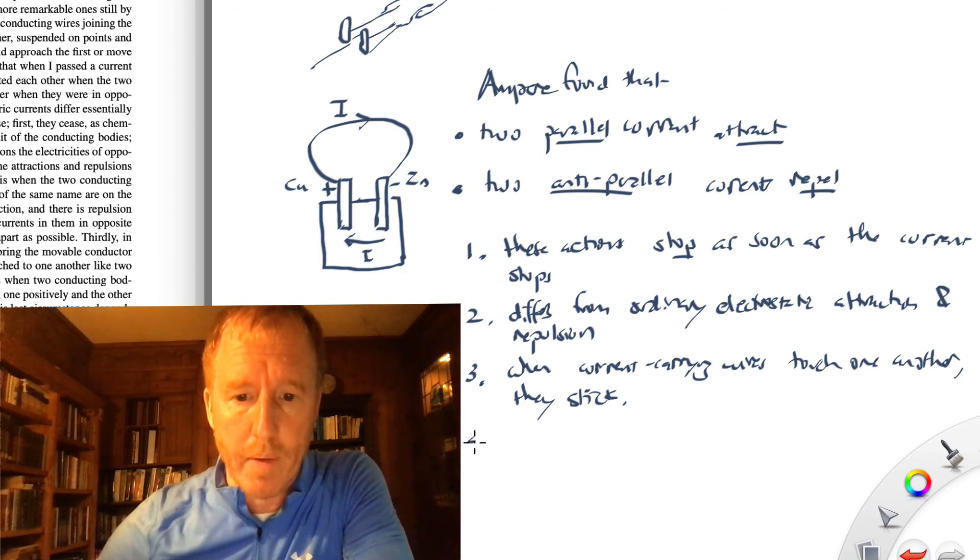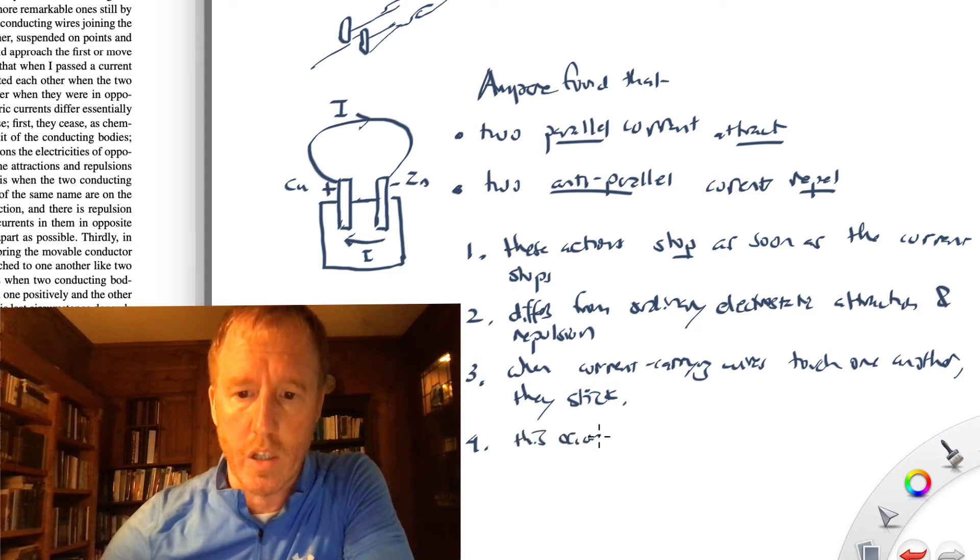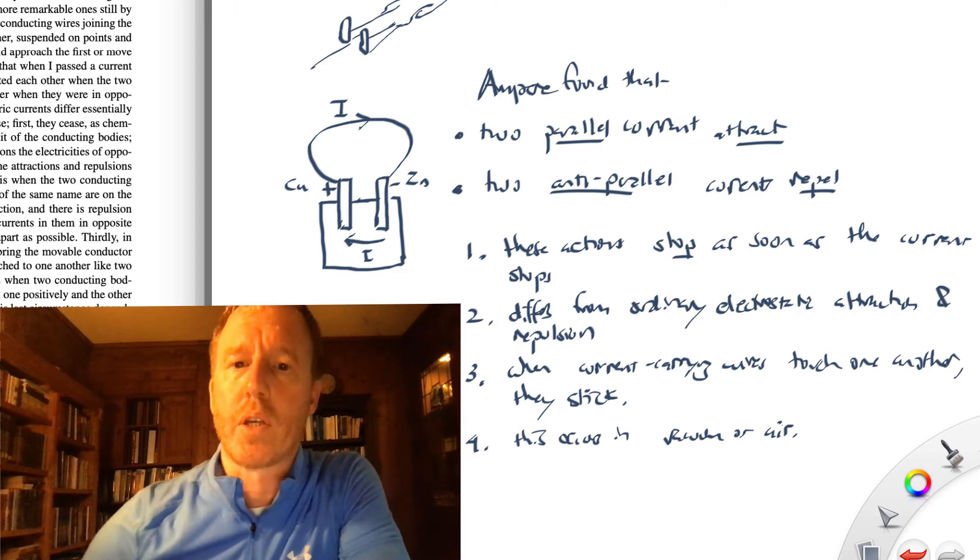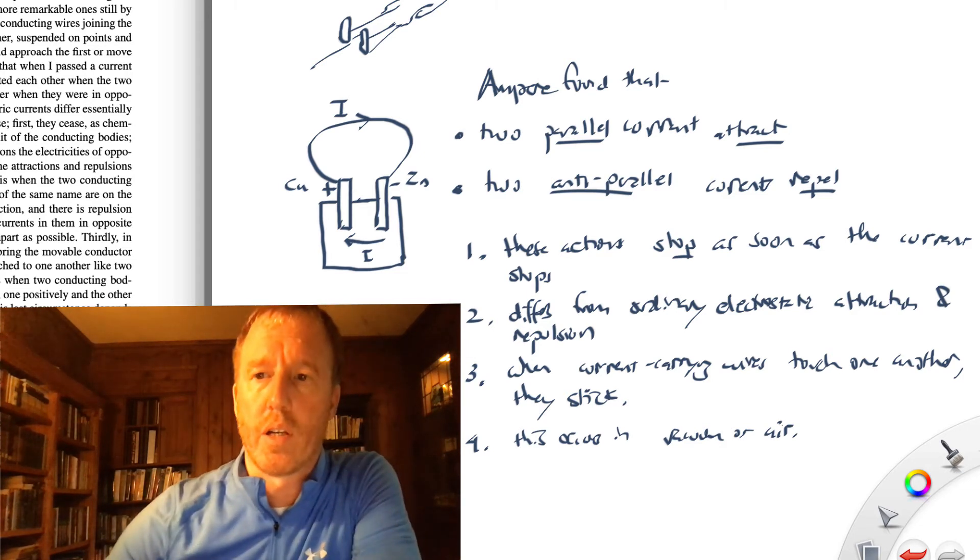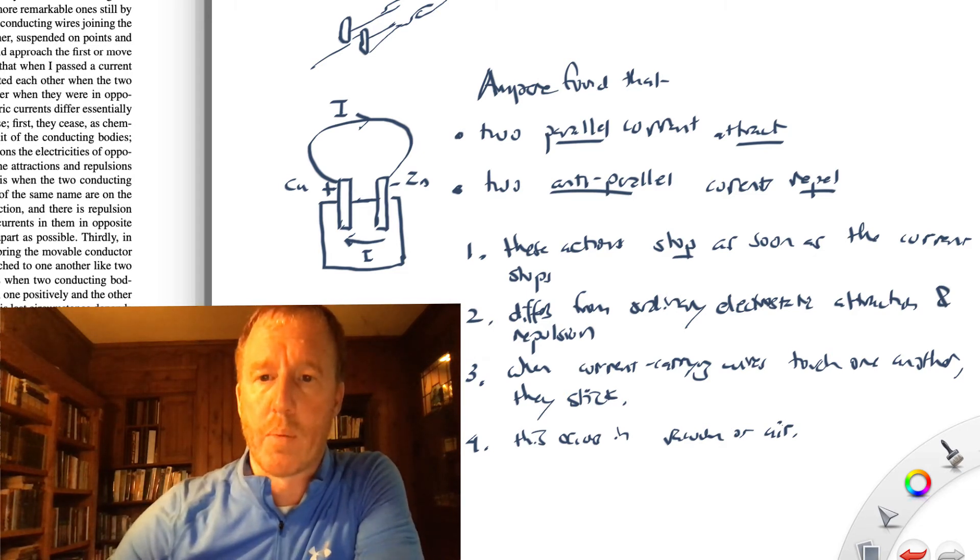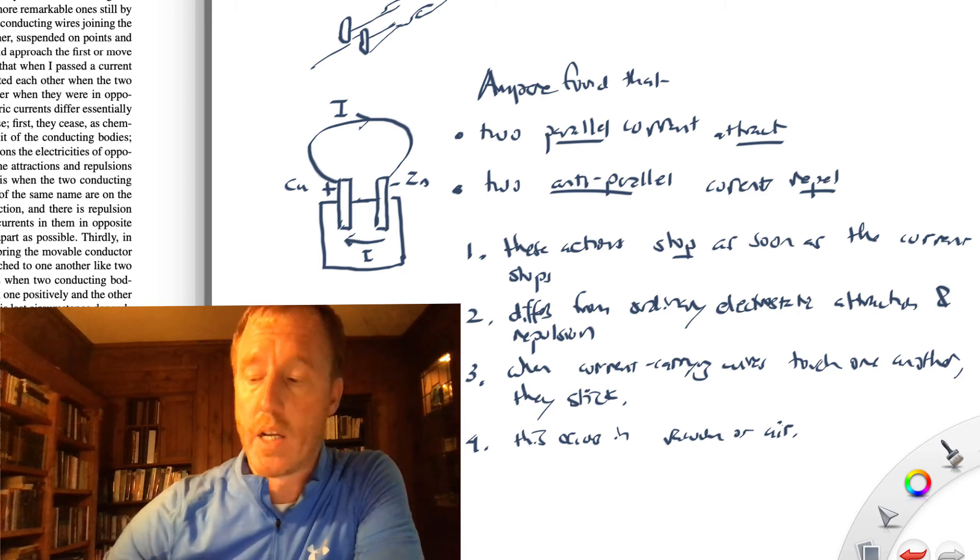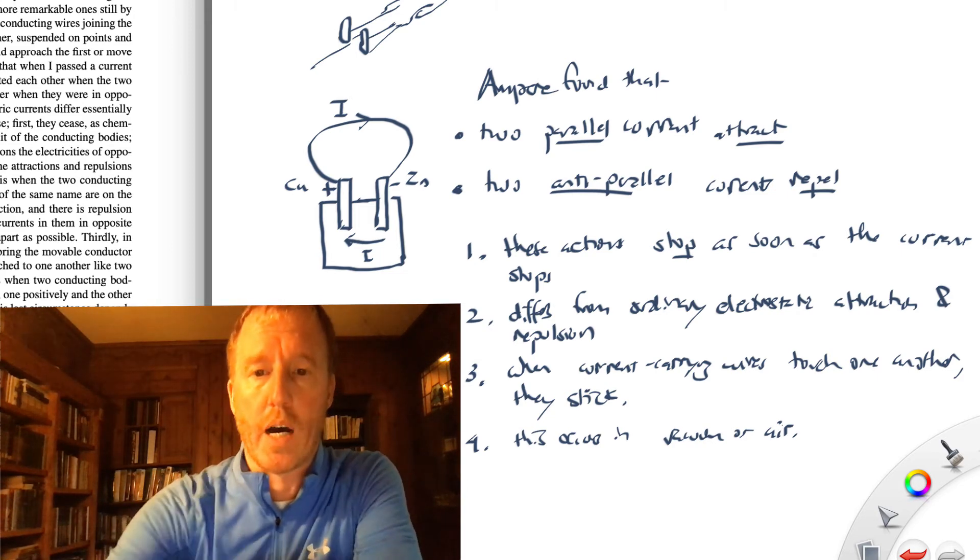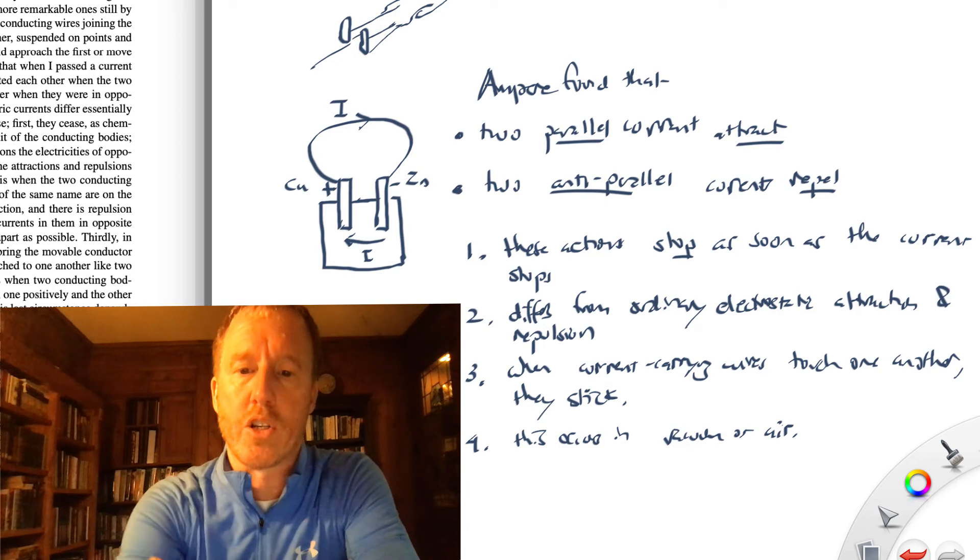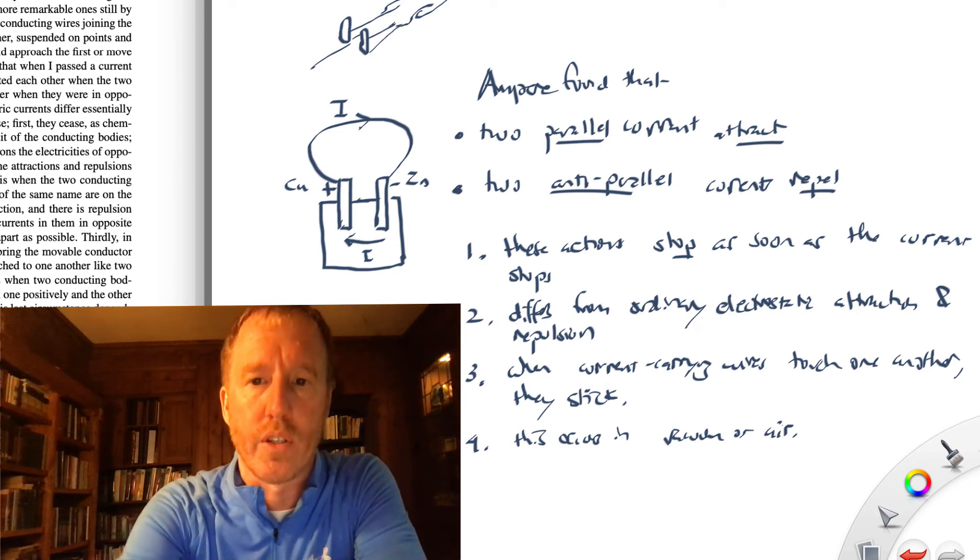And finally, he mentions that this attraction and repulsion occurs in vacuum or air. So it seems like you can't block this effect. If you have vacuum separating them or air separating them, and he doesn't mention this, but if you put other objects between them, so you try to shield this, you cannot easily shield this effect.